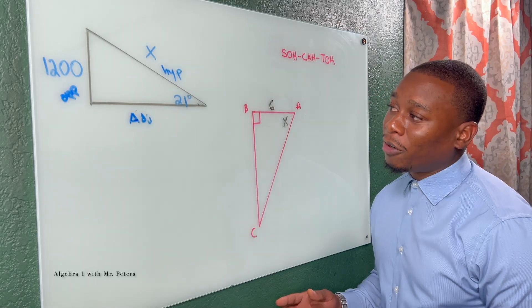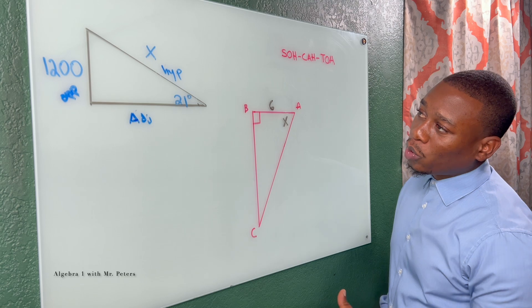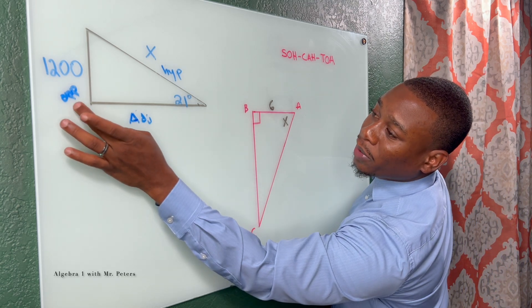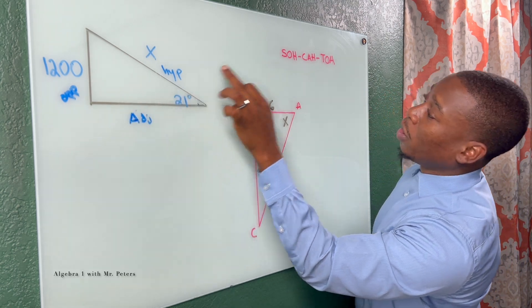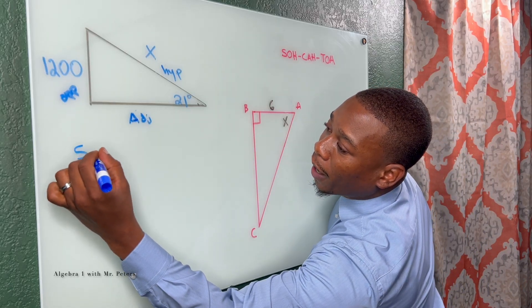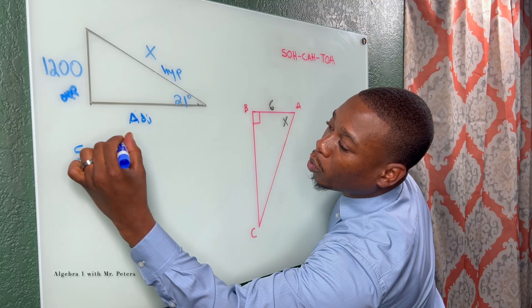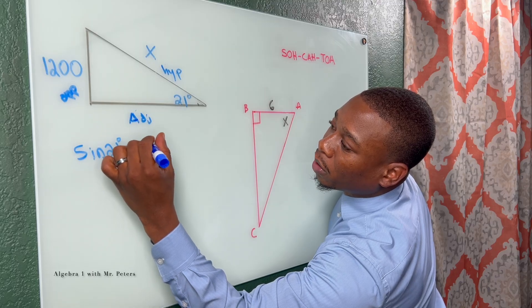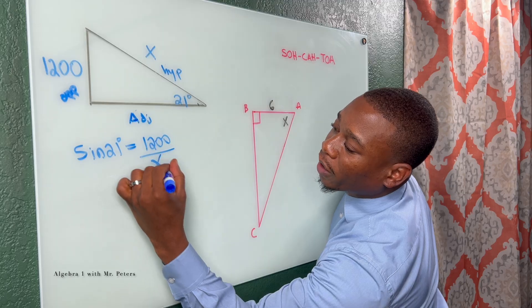So based off what we have, the only thing I could use is a relationship where we have the opposite over the hypotenuse. So that's going to be sine. So when I go in to solve this, I have sine 21 degrees is equal to what? The opposite, which is 1200 over X.